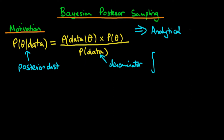The only exception is if we have a prior and a likelihood which are what we call conjugate distributions. So in general, analytically deriving the posterior is not going to be possible. So what can we do?